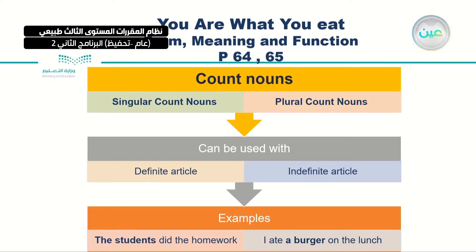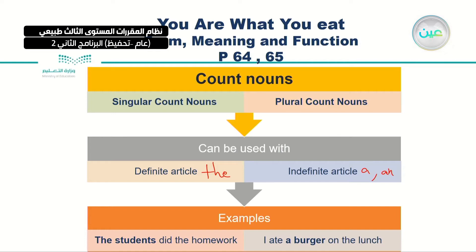We said that with countable nouns, we could use them as singular and plural. We could also use them with definite and indefinite articles. The definite article is 'the', and the indefinite articles are 'a' and 'an'. For example: 'the students did the homework' — this is the definite article. And 'I ate a burger at lunch' — this is the indefinite article.